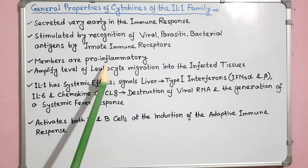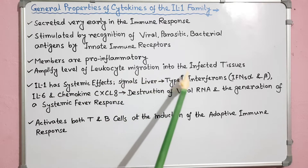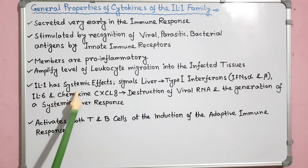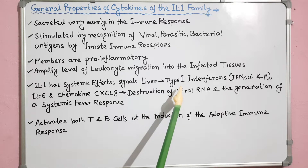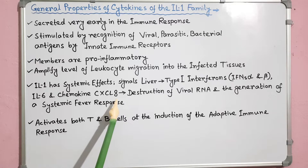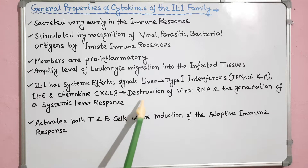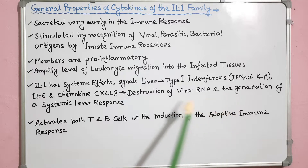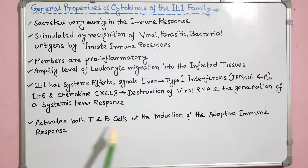Being pro-inflammatory means they induce an increase in capillary permeability at the site of cytokine secretion, and amplify the level of leukocyte migration into infected tissues. IL-1 has systemic effects and signals the liver to produce acute phase proteins such as type 1 interferons, IL-6 and chemokine CXCL8. These proteins further induce multiple protective effects including destruction of viral RNA and generation of systemic fever response. IL-1 also activates both T and B cells at the induction of the adaptive immune response.